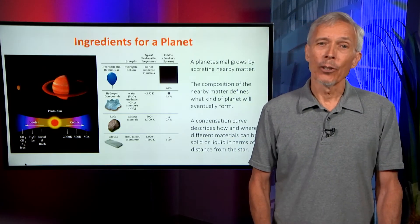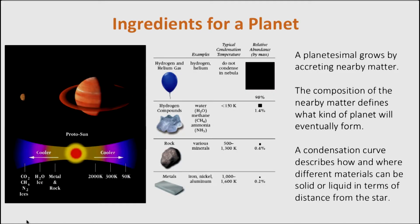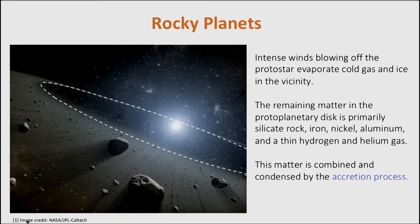This is the condensation curve that describes how different materials can be solid or liquid in terms of their distance from a star. The rocky material that forms planets in the inner solar system is not associated with a large amount of light gases because of the radiation from the young star. Radiation pressure drives away gas and also small dust particles from the inner regions of a solar system, so the remaining matter in the protoplanetary disk is primarily silicate rocks, iron, nickel, aluminum, and a very small amount of residual hydrogen and helium. As we've seen, these planets grow by the accretion process.